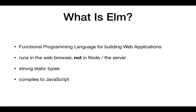So what is Elm? Elm is a functional programming language built for creating web applications. It has a compiler, a basic web server, and a REPL. You write in Elm and it compiles down to JavaScript, so it runs in the browser. You embed that in your HTML and can use normal HTML and CSS. Unlike ClojureScript or PureScript, it doesn't work in Node — Elm is specifically built for front-end web applications that run in the browser.